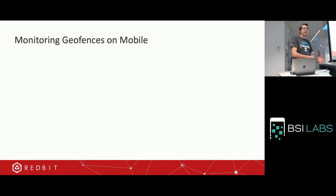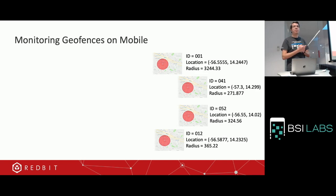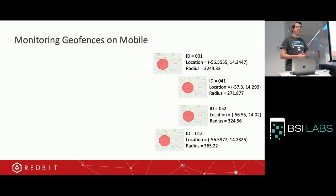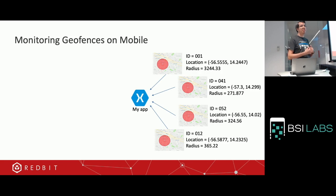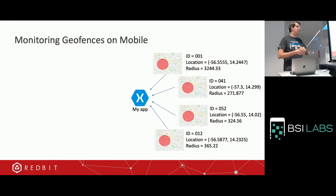Let me show this in a more graphical way. In our app at Redbit, we had a web application that creates geofences. In the picture you can see four of them — each one has an ID, a location, and a radius. My app gathers all these geofences from an API, but this is just my example. You could do it on your mobile app without an API. I'm using a Xamarin icon here, but it can be your native app — Swift, Java, or React Native. My app grabs the information from the API and registers it into the platform.